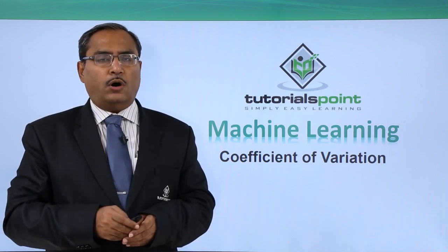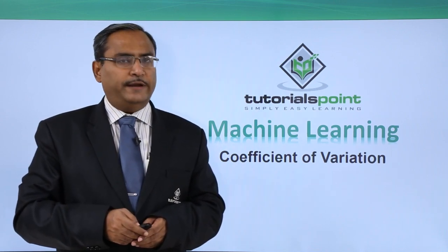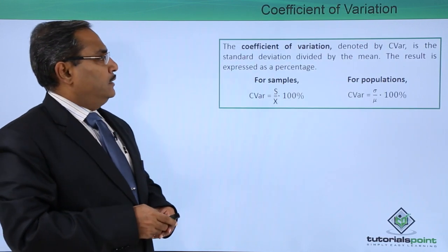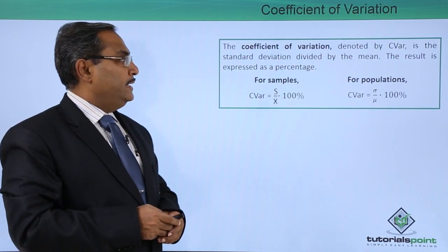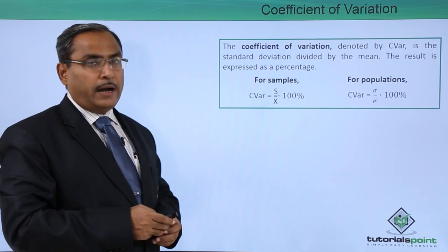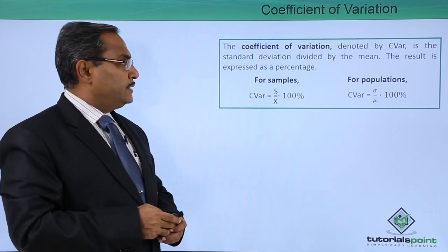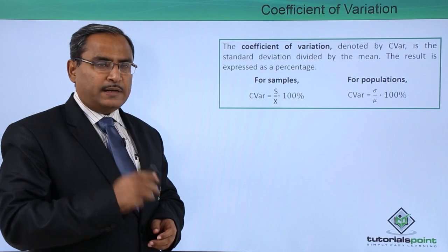In this video, we shall discuss the coefficient of variation. The coefficient of variation, denoted by CV, is the standard deviation divided by the mean. The result is expressed as a percentage.